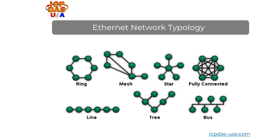Ethernet is the most widely used network topology. You can connect and link devices together with Ethernet switches in a ring, mesh, or fully connected configuration for redundant paths. The most common network topologies are bus, star, and ring. In star topology, devices or workstations are wired directly to one switch that maintains network connections.